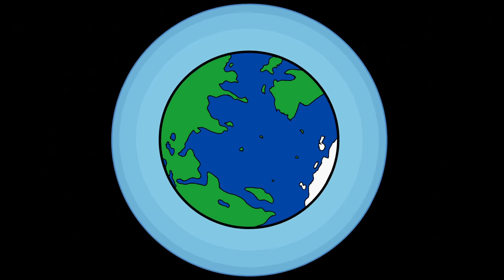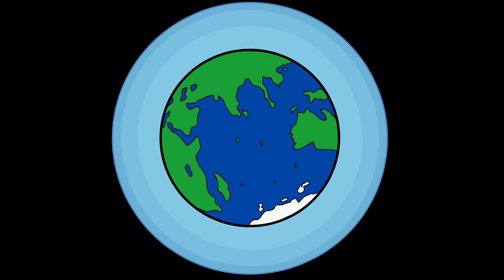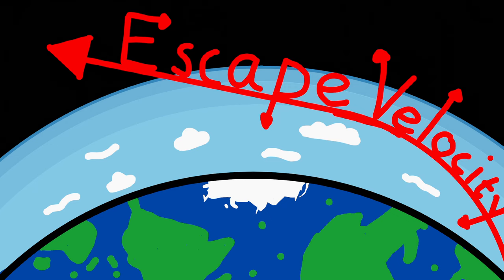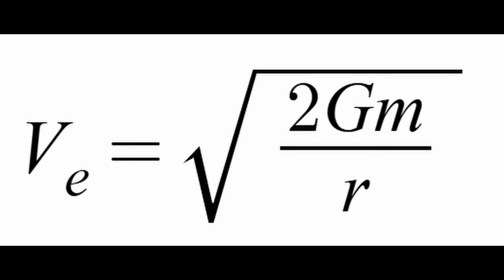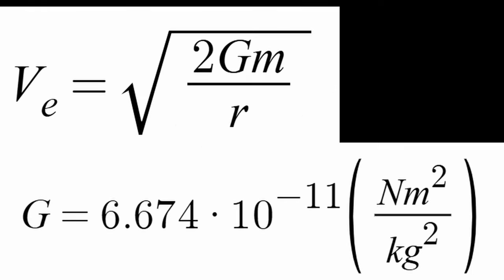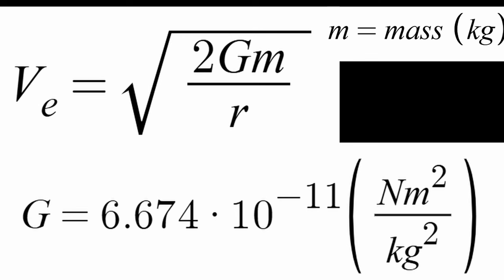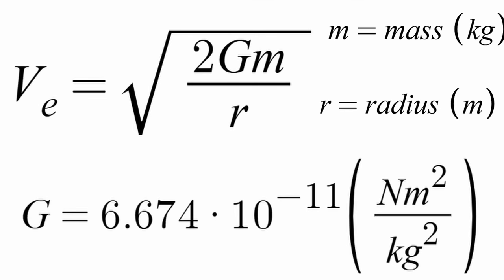I think now is a good time to introduce the equation for escape velocity. To calculate escape velocity you use the formula: V_E equals the square root of 2 times G times M divided by R, where G is the gravitational constant 6.674 times 10 to the power of negative 11, M is the mass of the object, and R is the radius of the object.